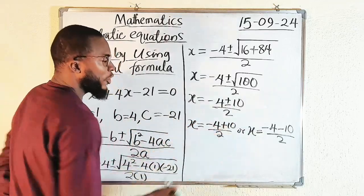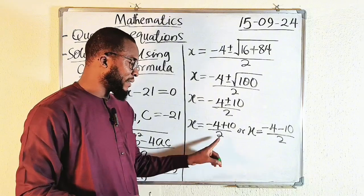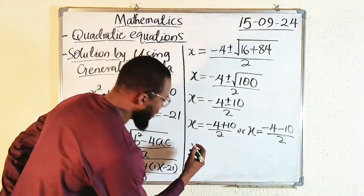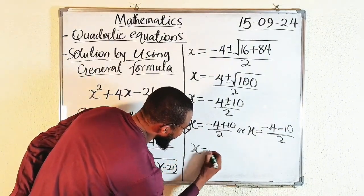So minus 4 plus 10 will give us plus 6, and 6 divided by 2 is 3. So you can see that x is equal to 3 here.